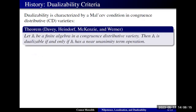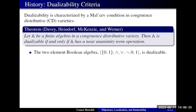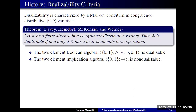Specifically in the congruence distributive setting, dualizability is equivalent to the presence of something called a near-unanimity term operation. For example, the two-element Boolean algebra has such an operation, so it's dualizable — or just by Stone duality, it's dualizable. But the two-element implication algebra does not have such a term operation, yet belongs to a congruence distributive variety, so it is non-dualizable.